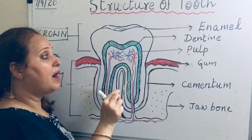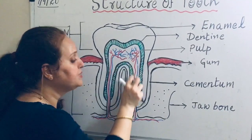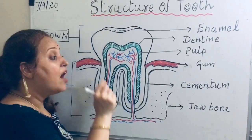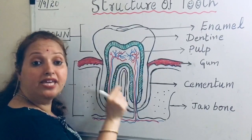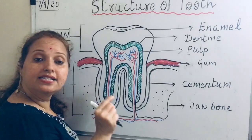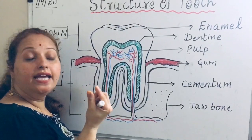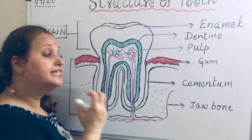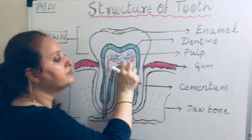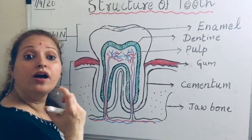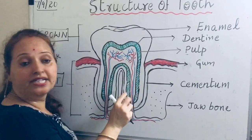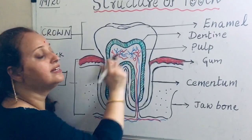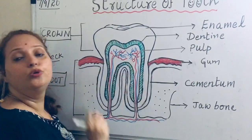Pulp is the soft part of the tooth and it mainly contains nerves and blood vessels. Inside our teeth we have blood vessels and nerves — that is the reason why, if you take an ice bar into your mouth, you feel a sensation. It is mainly because these nerves get excited and send information to our brain. The sensitive part of our teeth is the pulp, which contains blood vessels shown in red and nerves shown in blue.